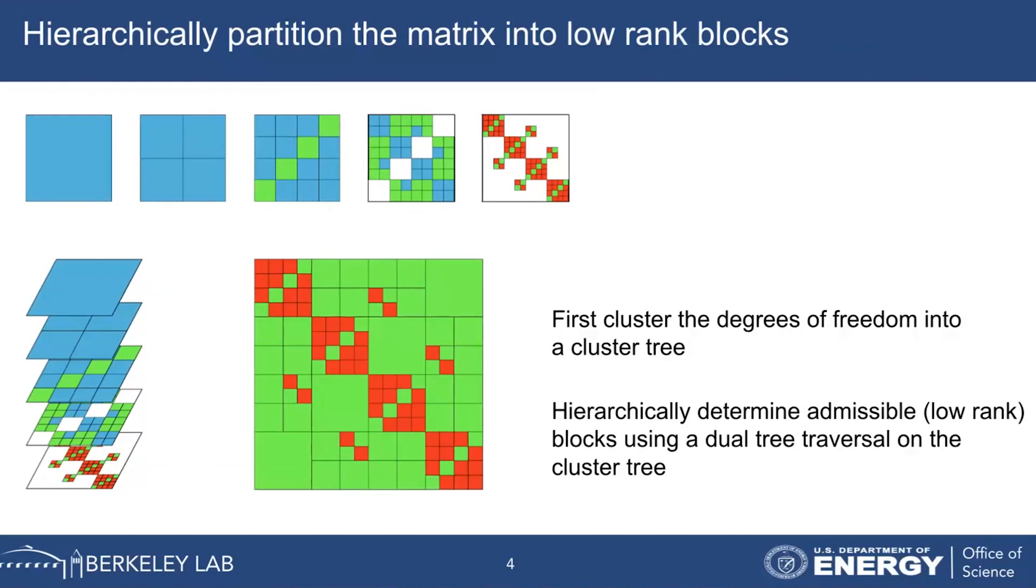We define an admissibility condition which tells us, based on if pairs of clusters can be stored as low rank, which we would call an admissible block, or if they need to be subdivided further, which we call an inadmissible block. We do a dual tree traversal on this cluster tree and figure out the structure, the low rank structure of this matrix.